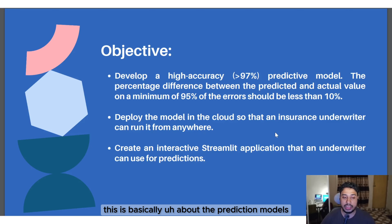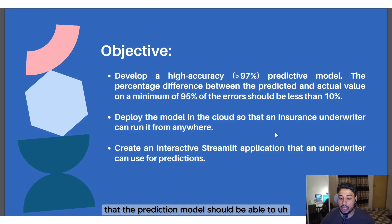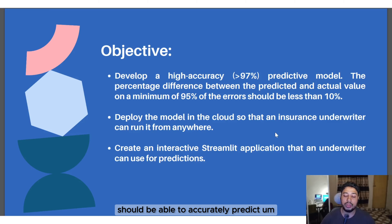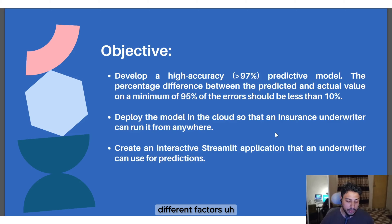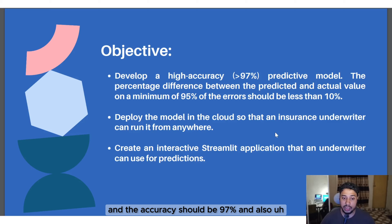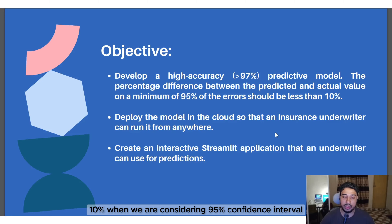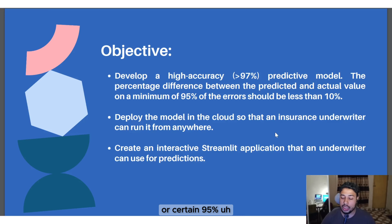The objective is that the prediction model should be able to accurately predict different factors and provide proper premium results. The accuracy target is 97%, and the error should be less than 10% at a 95% coverage interval.